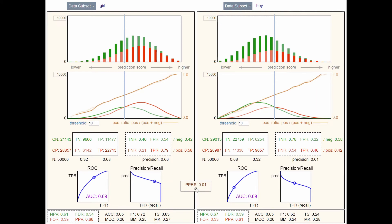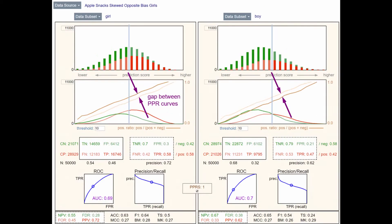We can devise measures of how well these curves line up. Basically, we're looking for something like the area between the PPR curves.